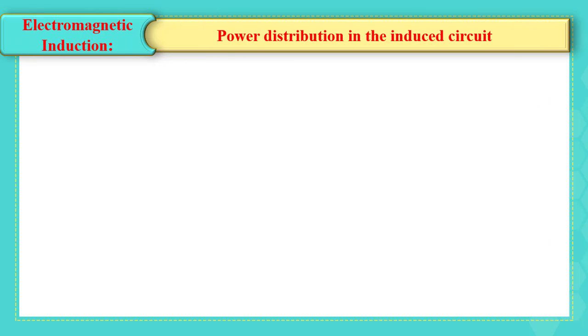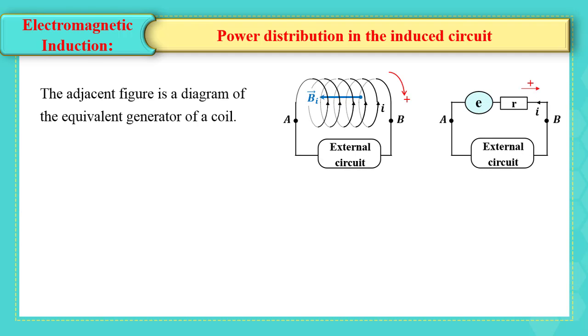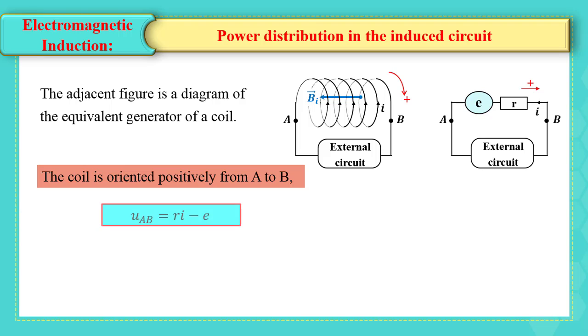Power distribution in the induced circuit. The adjacent figure is a diagram of the equivalent generator of a coil. The coil is oriented positively from A to B, so the voltage UAB is equal to Ri minus E.